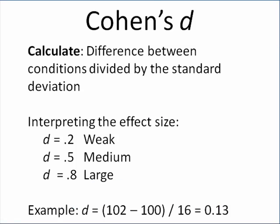To help get an idea of whether something is meaningful or not, there is a measure of how effective the treatment is. It's called Cohen's D. The way you calculate Cohen's D is you take the difference between the two conditions and divide it by the standard deviation.